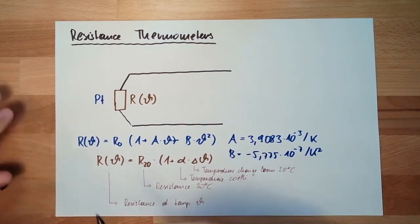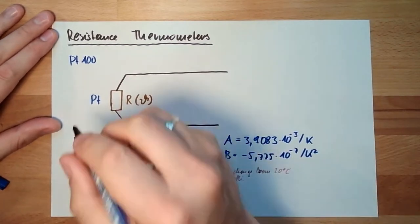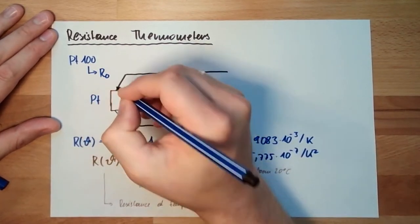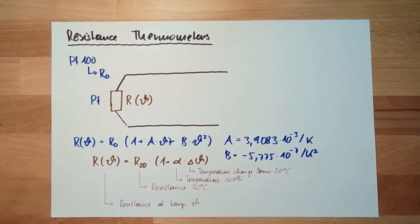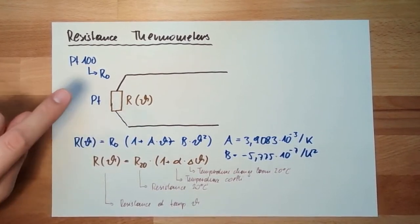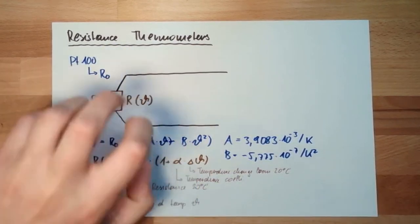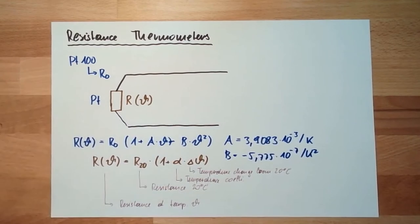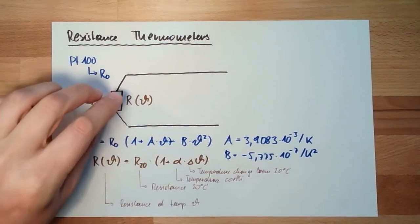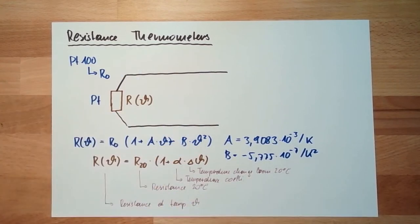Usually we do use so called PT100 measurement systems. What is a PT100? This is the R zero here. It has at zero degree Celsius a resistance of 100 ohms. There are also PT500 which would have 500 ohms, PT1000 which would have 1000 ohms. PT100 is the most common one material for resistance thermometers.